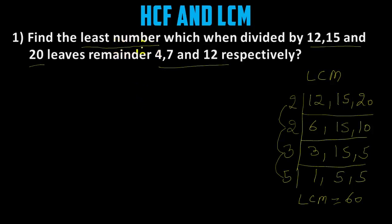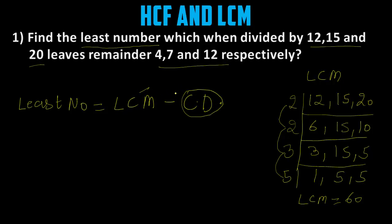In this question we have to find the least number and different remainders are also given. There is a formula: least number = LCM minus common difference. We have already found the LCM. Now we find the common difference. The three numbers are 12, 15 and 20, with respective remainders 4, 7 and 12. So: 20 minus 12 is 8, 15 minus 7 is also 8, and 12 minus 4 is also 8. So the common difference is 8.